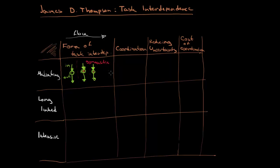Moving to coordination: since these individual and separated performances influence the whole outcome, what kind of coordination do we want? We want some standards — standardization. We rely on the fact that every gymnast is going to deliver a standardized, high-quality performance.